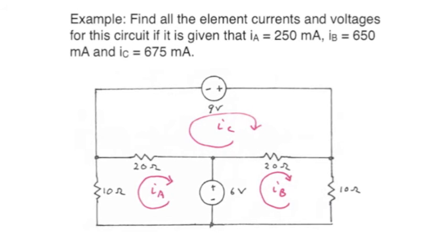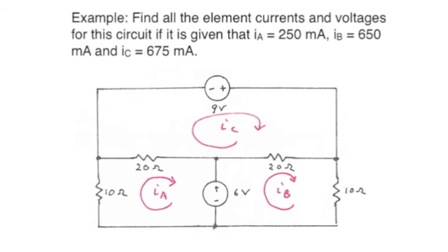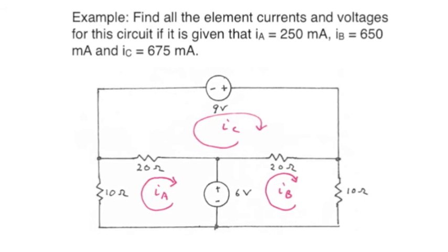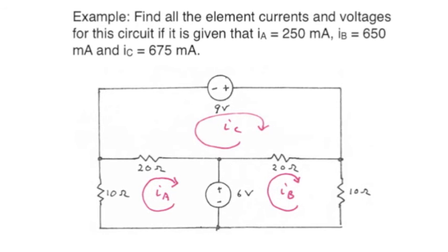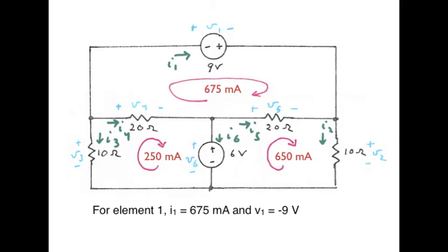Suppose we were told that for this circuit the mesh currents are I sub A equals 250 milliamps, I sub B equals 650 milliamps, and I sub C equals 675 milliamps. Let's do a numerical exercise of deducing some element currents, voltages, and powers. For element 1 at the top, I sub 1 equals 675 milliamps. The voltage V sub 1 equals minus 9 volts. The power is I times V, which is minus 6.075 watts. The source delivers 6.075 watts.